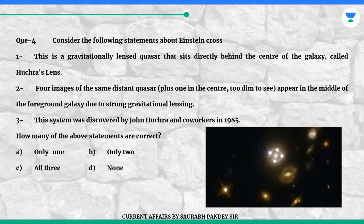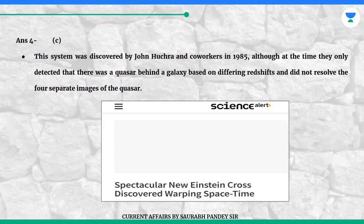How many of the above statements are correct? A. Only one. B. Only two. C. All three. D. None. Answer is C. This system was discovered by John Huchra and colleagues in 1985, although at the time they only detected that there was a quasar behind a galaxy based on differing redshifts and did not resolve the four separate images of the quasar.